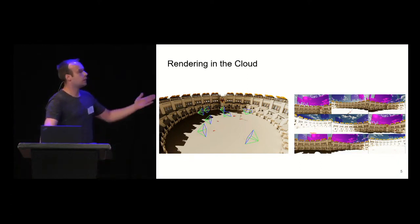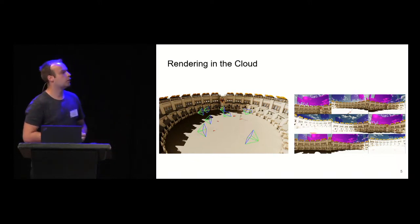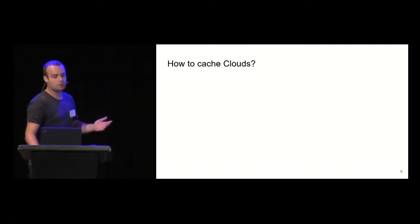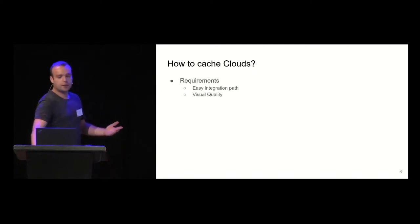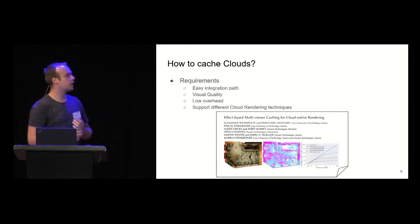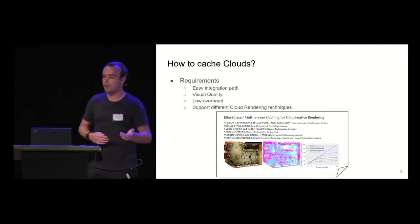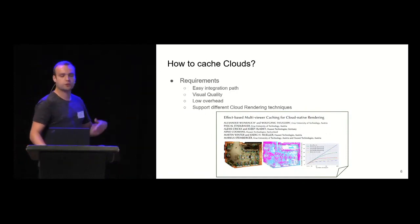We can share their computations. So there is high potential for saving on hardware budget or energy or both. Now comes the question, cloud computations, when you go beyond a simple skybox, are view dependent. How can we actually share those computations between different viewpoints? For this, we need to cache them somehow. We had some simple requirements: really easy integration path into existing rendering techniques and pipelines and game engines, the same visual quality, really low overhead and support for different cloud rendering techniques. For this, we use on-surface caches and multi-view caching for cloud rendering.